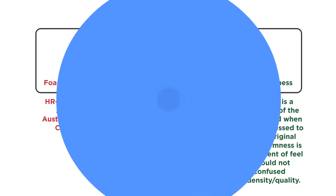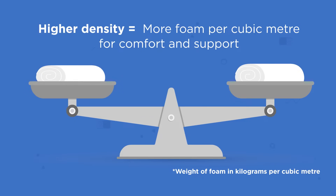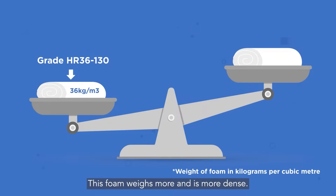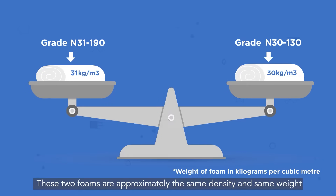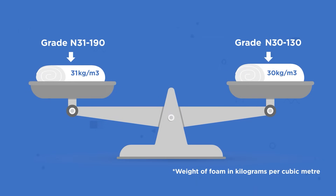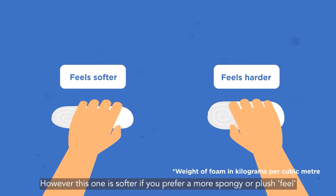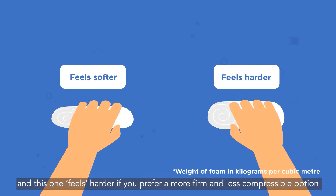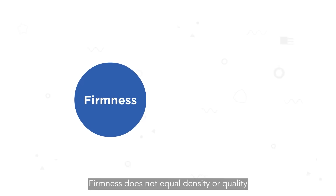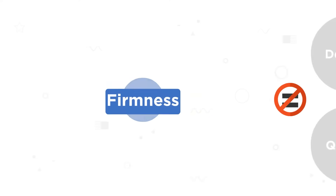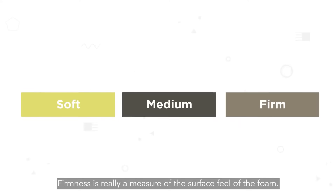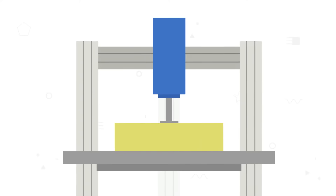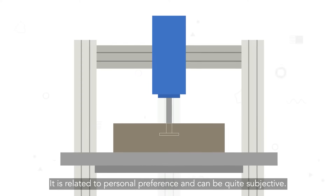Here is an example foam grade. Density is how we measure foam weight. This foam weighs more and is more dense; this foam weighs less and is less dense. These two foams are approximately the same density and same weight. However, this one is softer if you prefer a more spongy or plush feel, and this one feels harder if you prefer a more firm and less compressible option. Firmness does not equal density or quality. While all foams are tested for firmness by measuring the amount that they compress, firmness is really a measure of the surface feel of the foam. It is related to personal preference and can be quite subjective.